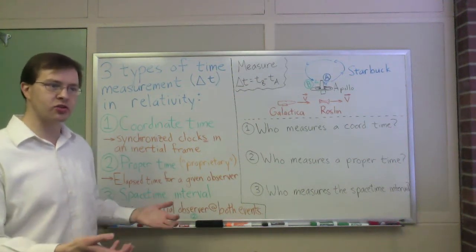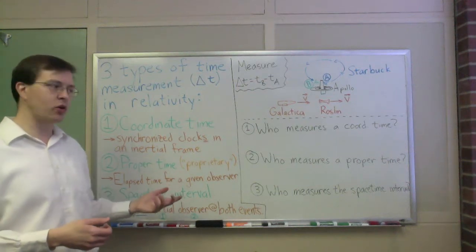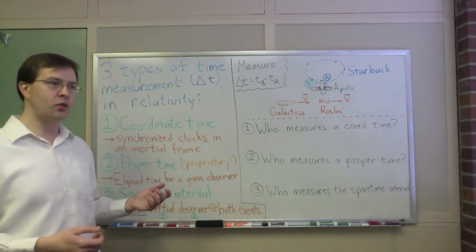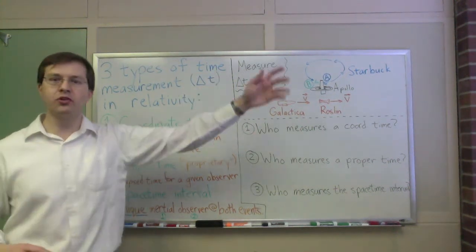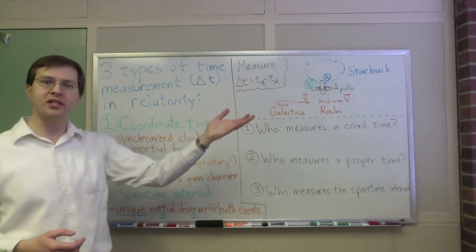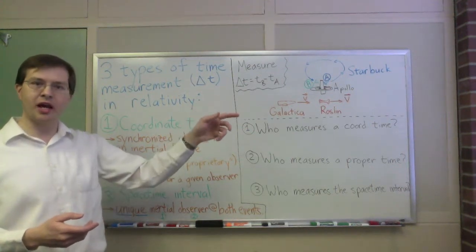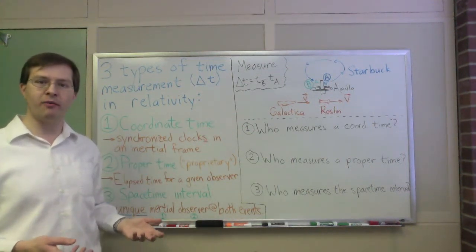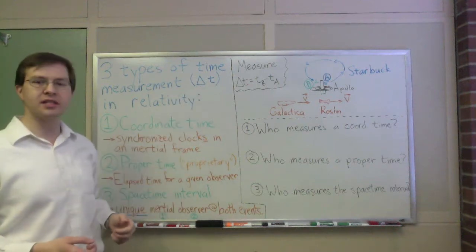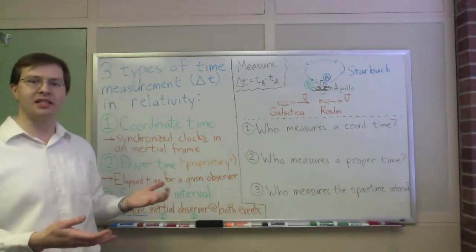You look at the nearest inertial reference frame synchronized clock, and you write down the time that is the coordinate time of event A. And then when event B happens, maybe some totally different place, you look at the nearest inertial reference frame synchronized clock in that particular frame, and you write down the time it reads, and that's the coordinate time of event B. So the delta T, the difference in time between those two events, is just the T B minus T A. It's the difference of those two times.